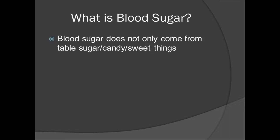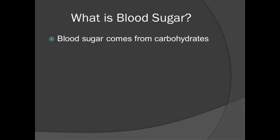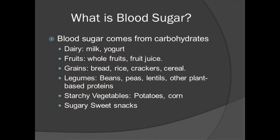Blood sugar does not only come from table sugar, and this is a common misconception. People say, 'How did I develop diabetes, doctor? I don't eat hardly any sugar at all.' They're not understanding the difference between table sugar and blood sugar. Blood sugar actually comes from carbohydrates — including dairy such as milk and yogurt, fruits, whole fruit and fruit juice, grains like bread, rice, crackers and cereal, legumes such as beans, peas, lentils, starchy vegetables like potatoes and corn, and sugary sweet snacks.